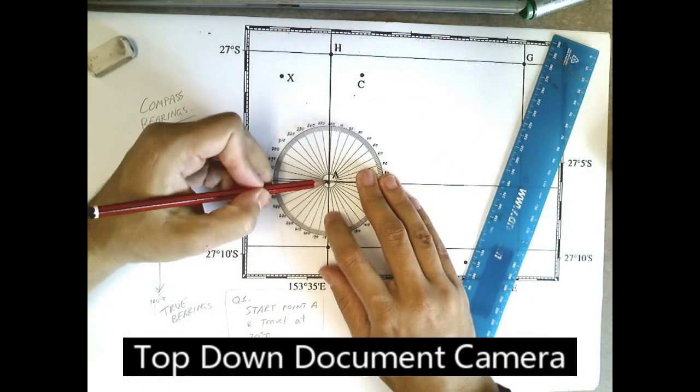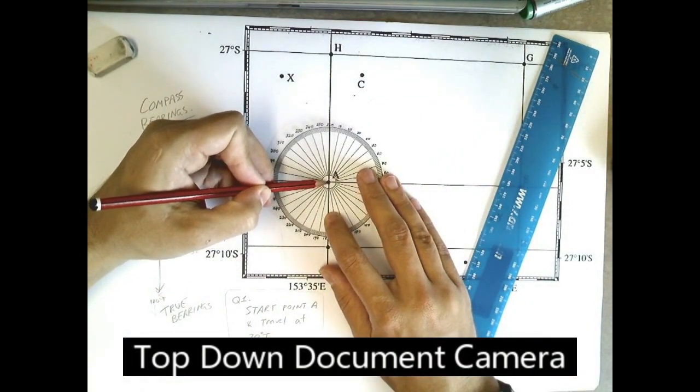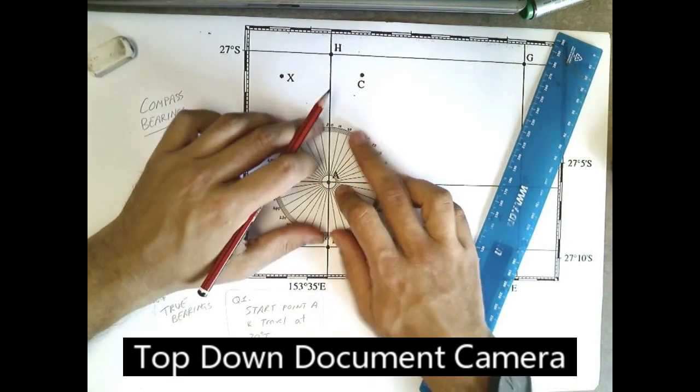When you move it there, you'll see that I've put the centre exactly where A is. It's important that you try to be as accurate as possible. And I've put the number 360 at the top facing north.